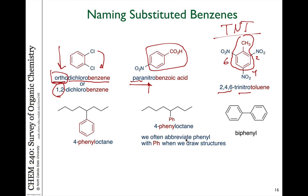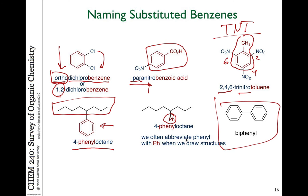Phenyl as a substituent: if we have something like an octane chain, we would name this as 4-phenyloctane. Sometimes when we draw structures, we abbreviate the benzene ring using Ph to indicate a phenyl ring. A common name for two benzene rings attached by a single bond is referred to as biphenyl — the phenyl group is a substituent on the other benzene ring, which makes it technically phenylbenzene, but it's commonly referred to as biphenyl.